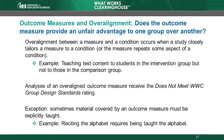If a study uses an overaligned outcome measure, the WWC will rate all analyses that use the measure as Does Not Meet WWC Group Design Standards. This rule does not apply if material covered by an outcome measure must be explicitly taught. For example, reciting the alphabet requires being taught the alphabet. The WWC would not consider this measure overaligned in situations where teaching young children to recite the alphabet is a developmentally appropriate component of the intervention.